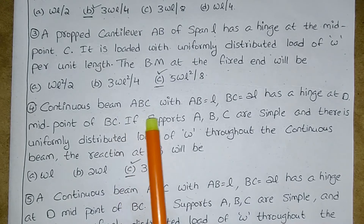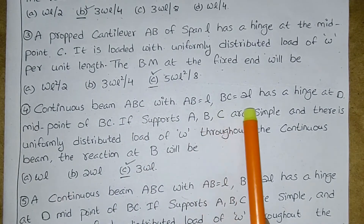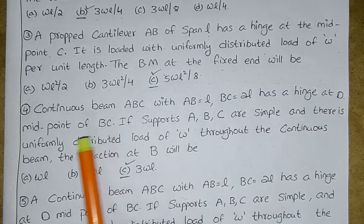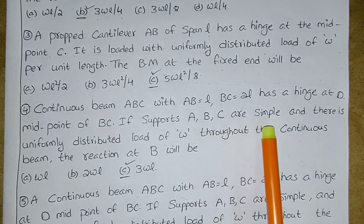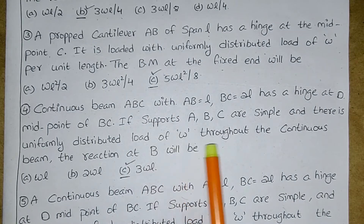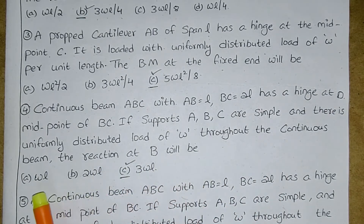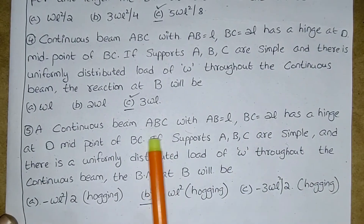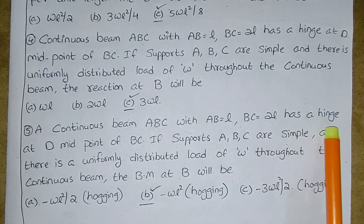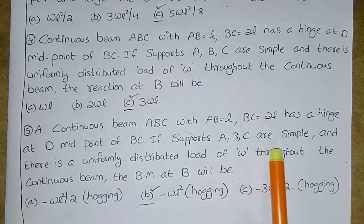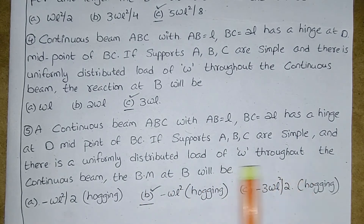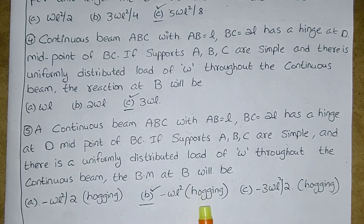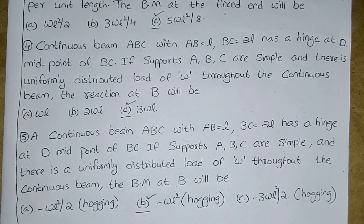Next: continuous beam ABC with AB = L and BC = L has a hinge at D, the midpoint of BC. Supports ABC are simple and there is a uniformly distributed load of w throughout the beam. The reaction at B will be: -wL²/2 hogging, -wL² hogging, or -3wL²/2 hogging. The correct answer is -wL² hogging.